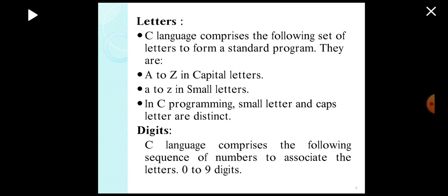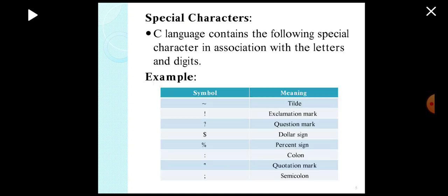Next is digits. C language comprises the following sequence of numbers to associate the letters, from 0 to 9 digits. Next is special characters. C language contains the following special characters in association with the letters and digits. Some of the symbols like tilde symbol, exclamation marks, question marks, and dollar symbol are used in a program.